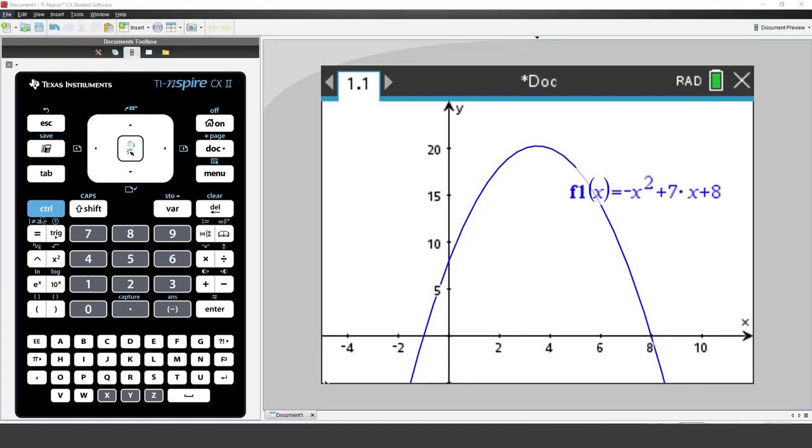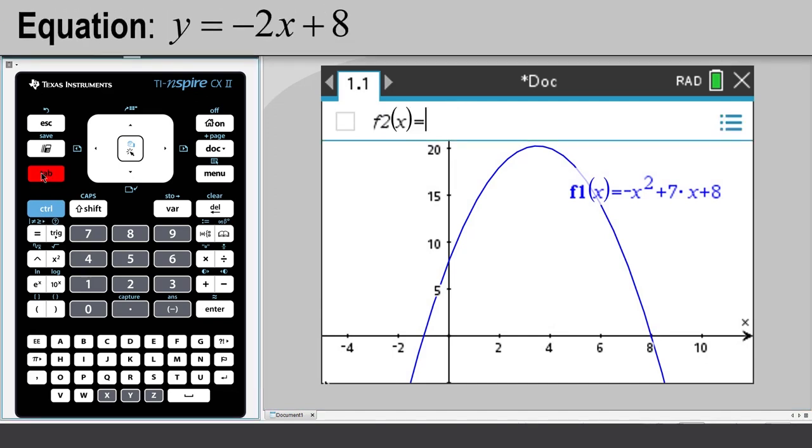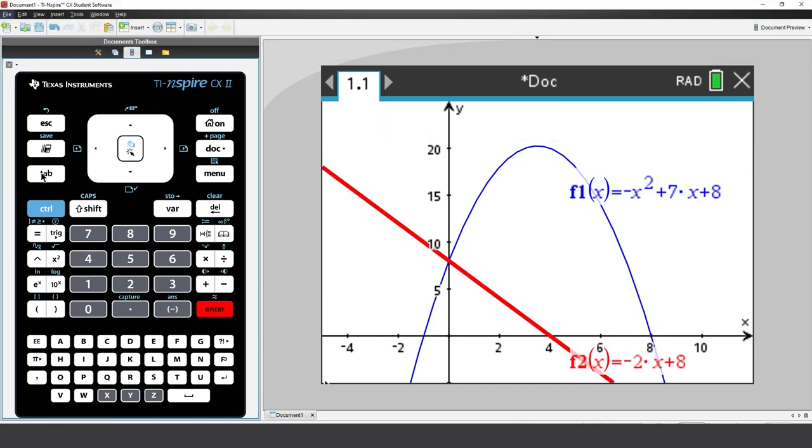Let's add another graph. Press Tab. Enter the straight line equation Y equals negative 2X plus 8. The straight line crosses the parabola at X equals 0 and somewhere to the lower right of screen.